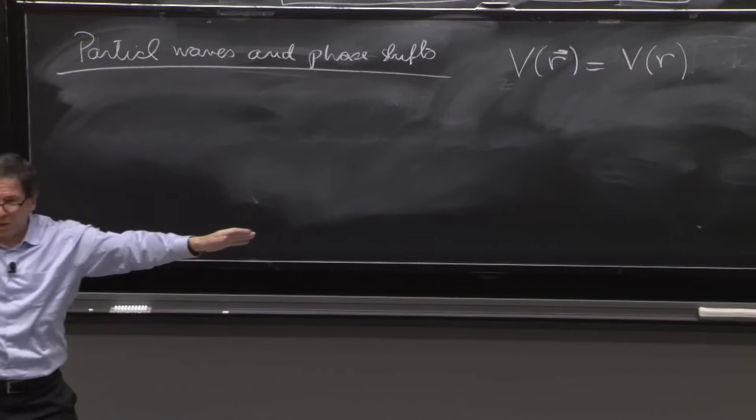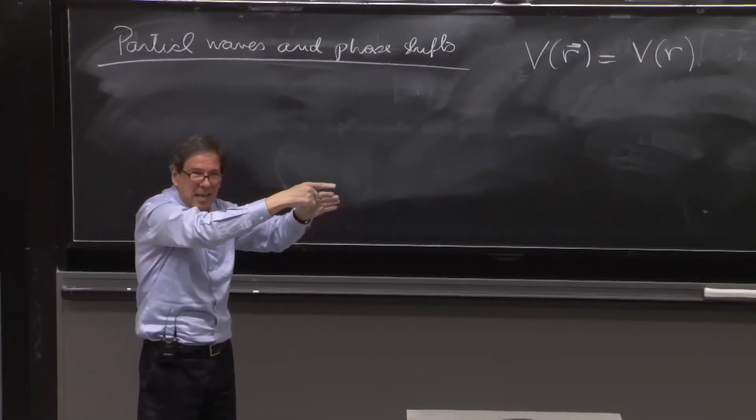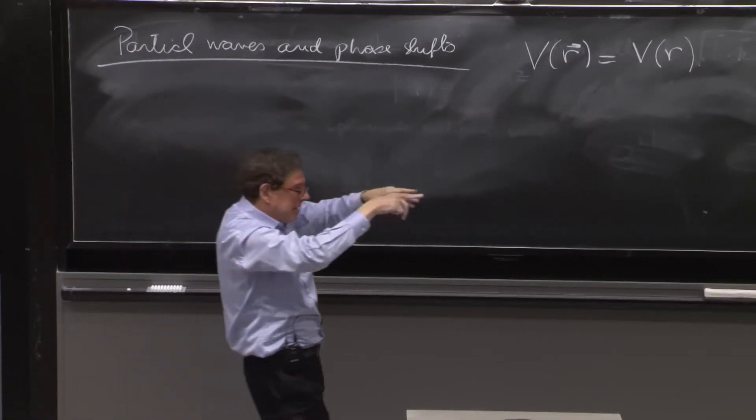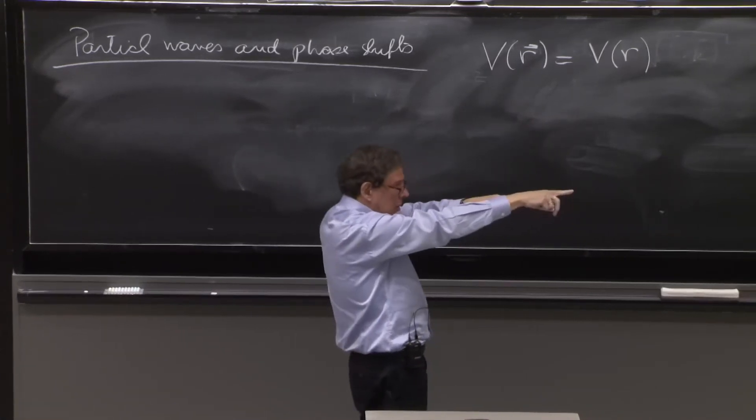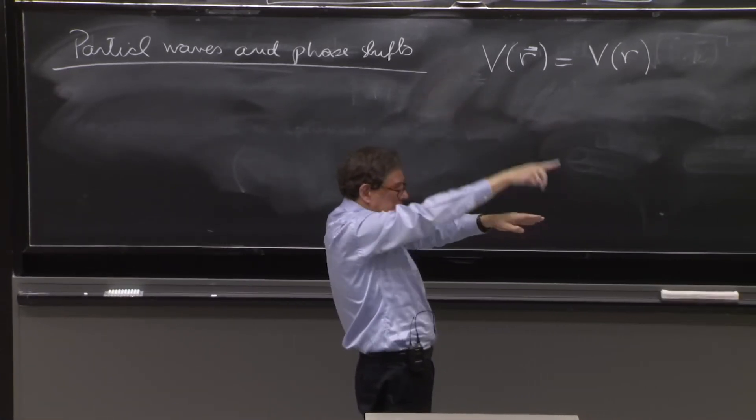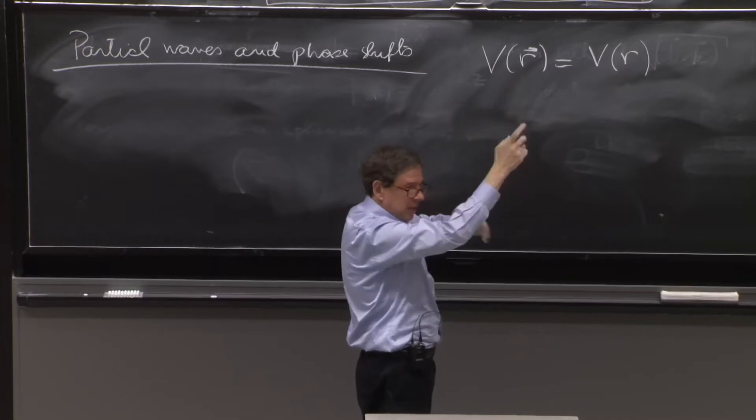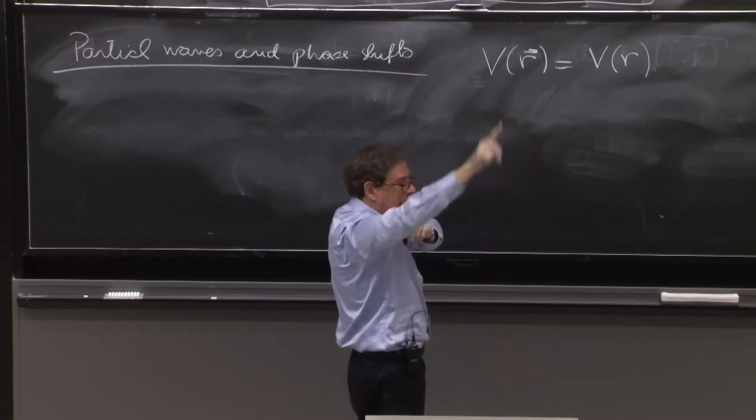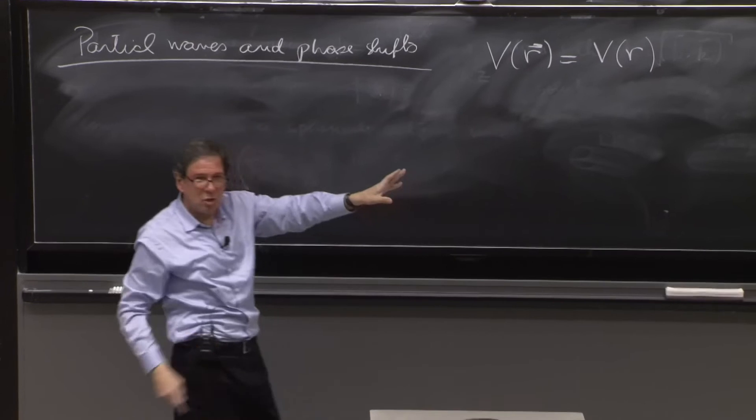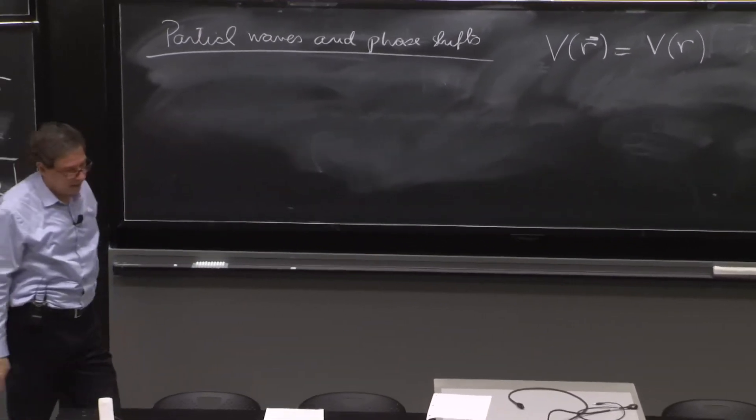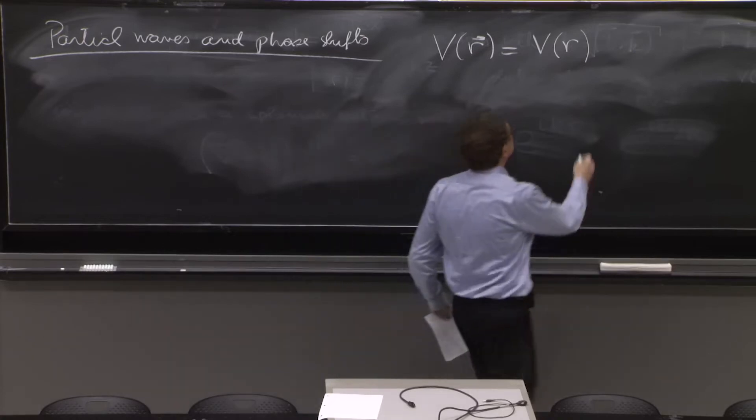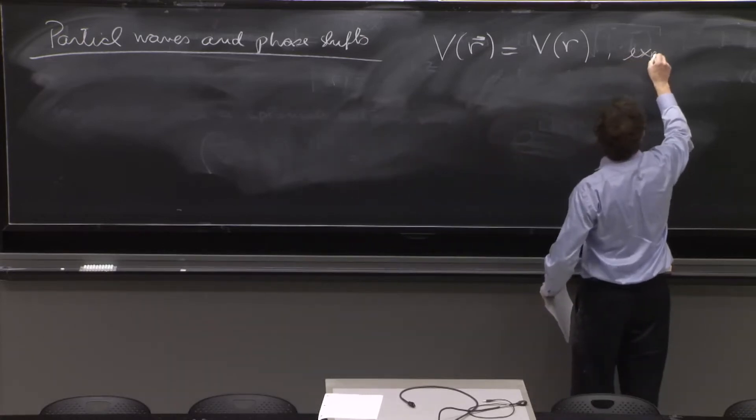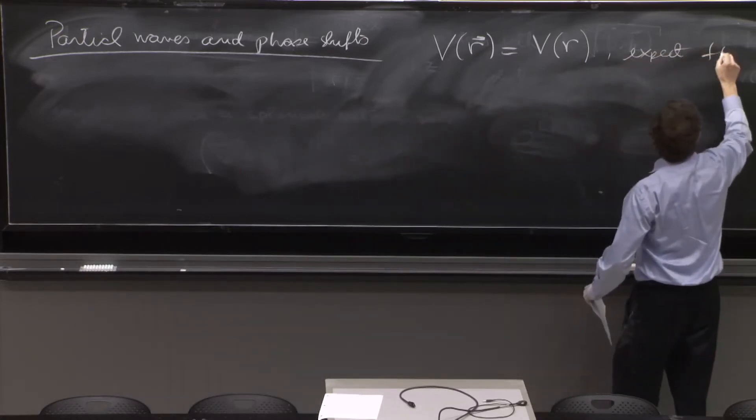But still, you're coming from a particular direction, the z. So you can expect now that the scattered wave depends on the angle of the particle with respect to z, because it's spherically symmetric. But it shouldn't depend on phi, the angle phi. It should just depend on theta. So expect f of theta only.